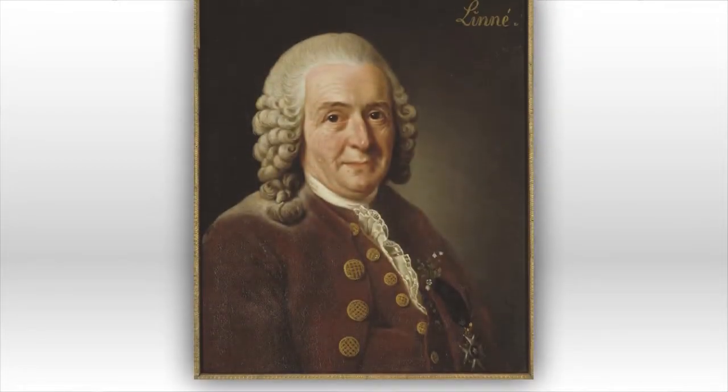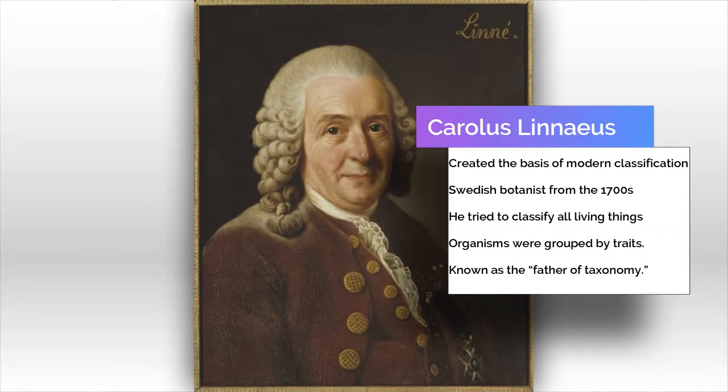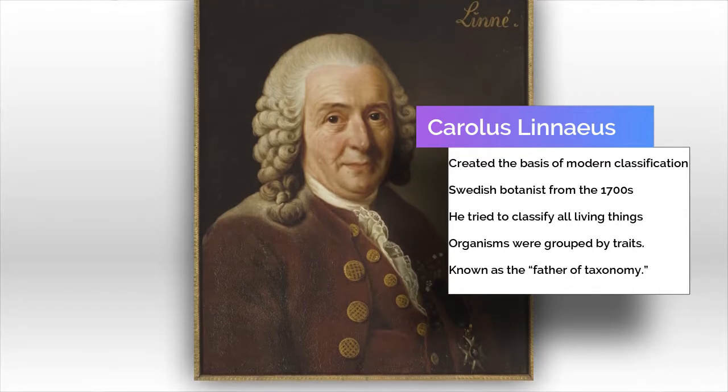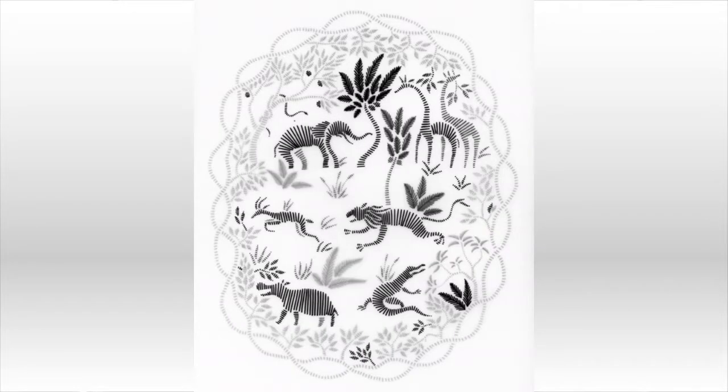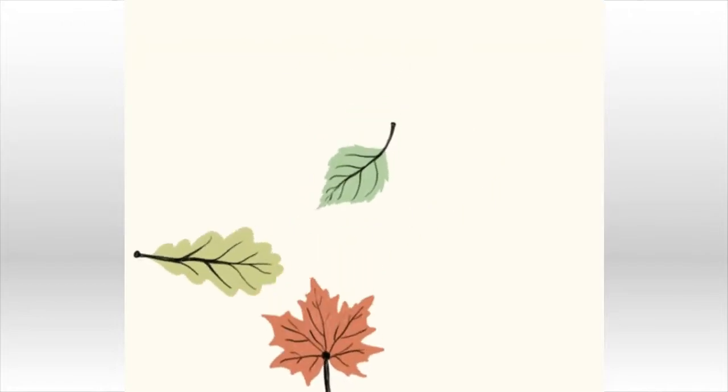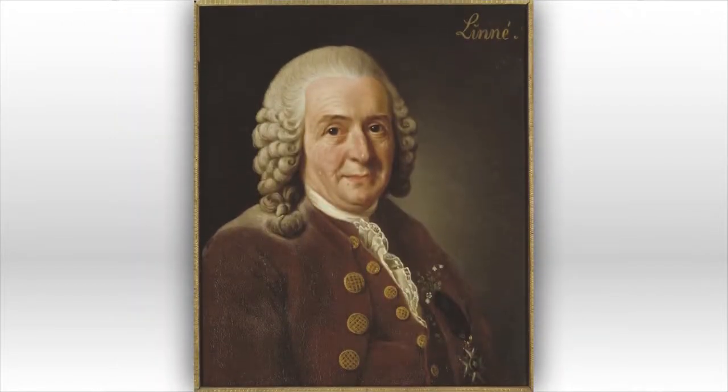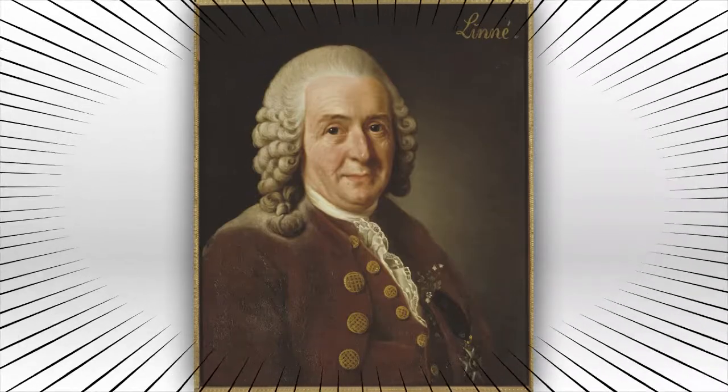Before we go any further, I want to give credit where credit is due — to the one who came up with the process of taxonomy. The modern way we classify biology was developed by Swedish botanist Carlos Linnaeus in the 1700s. He tried to classify all living things known at his time, grouping together organisms that shared obvious physical characteristics — in animals it might be the number of legs, in plants it might be the shapes of their leaves. Because of this, Linnaeus is known as the father of taxonomy.